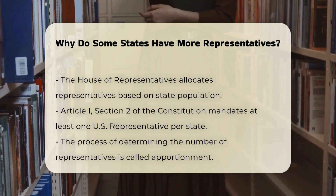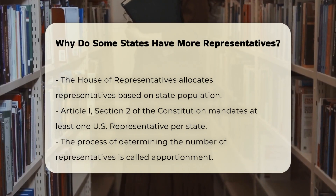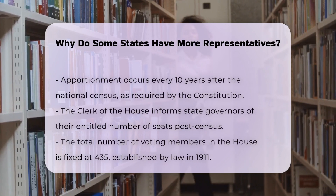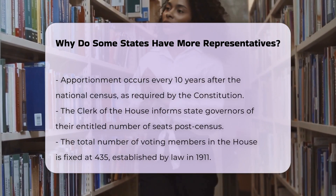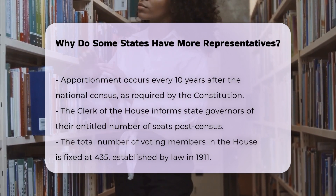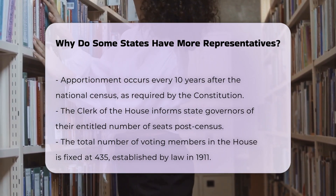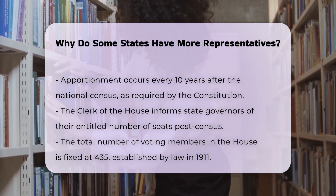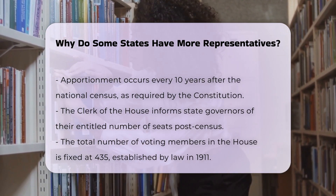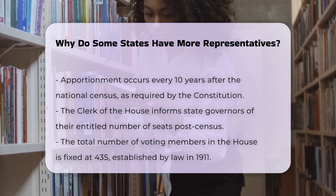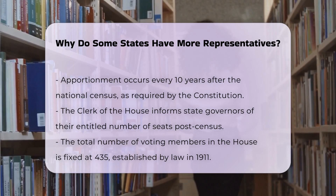The process of determining the number of representatives for each state is called apportionment. This process occurs every 10 years, following a national census, as required by the Constitution. After the census results are provided, the Clerk of the House informs each state's governor how many seats the state is entitled to.